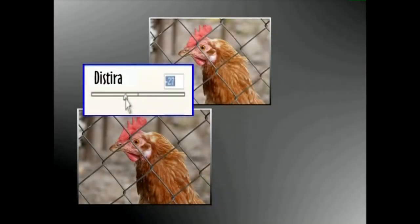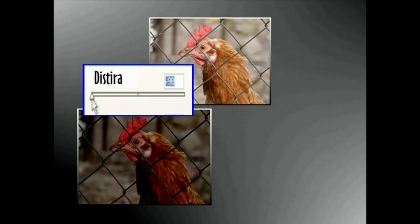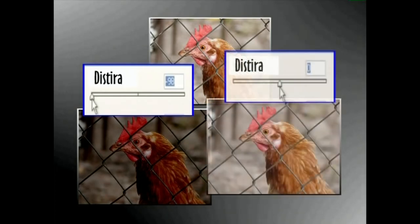Irudi baten diztiraren parametroak aldatuz gero, haren erdiko tonuen eta tonu argien artean dauden puntu guztien diztira haundituko edo txikituko dugu.